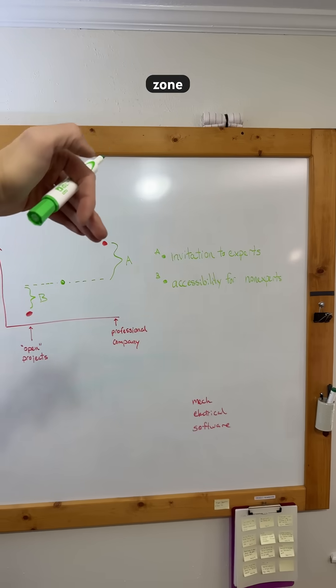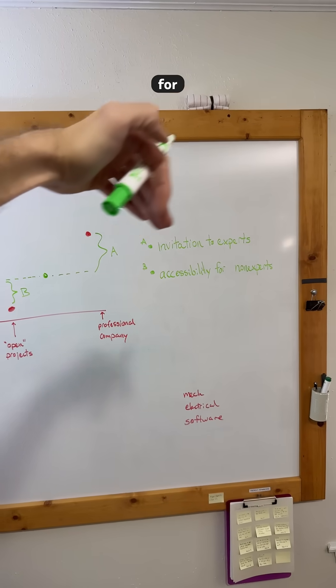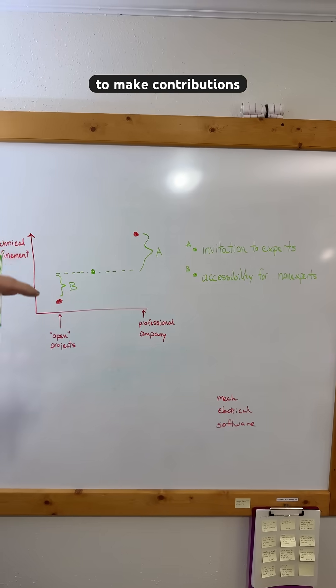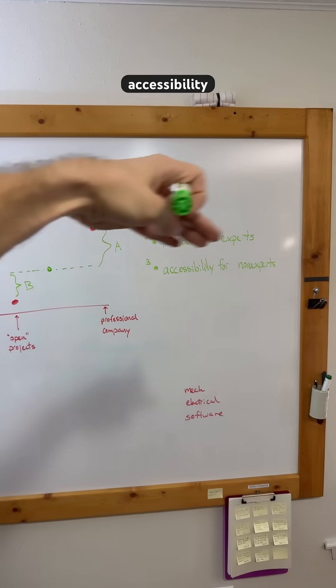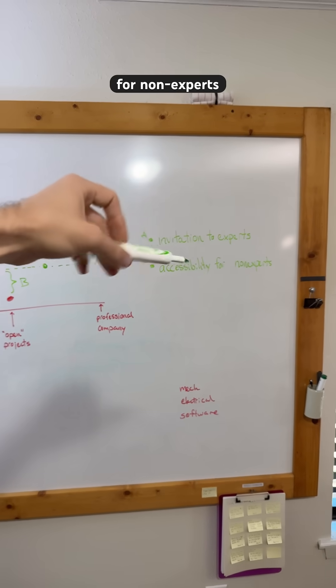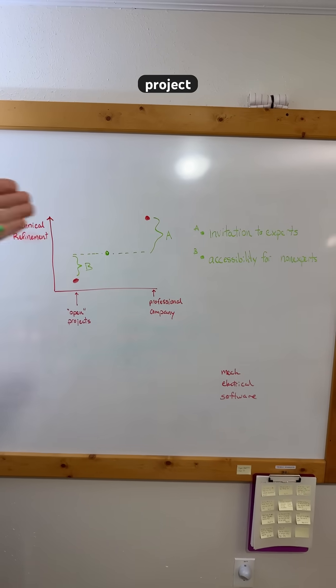I am suggesting that zone A is your invitation for other experts to make contributions and zone B is the accessibility zone for non-experts to still be able to move forward with your project.